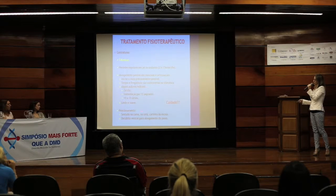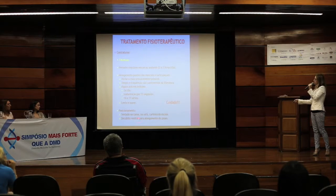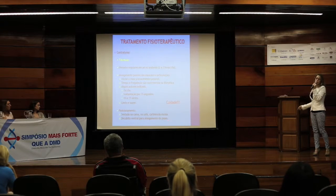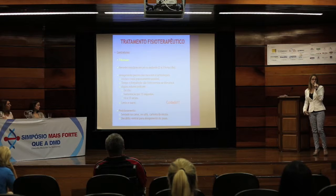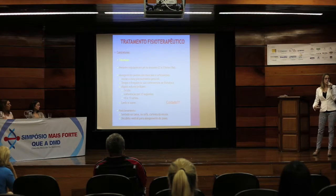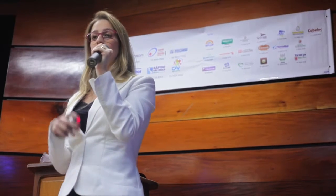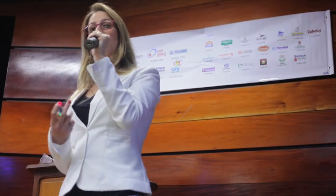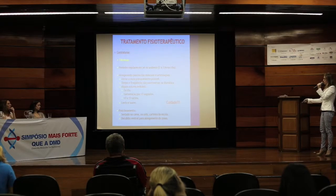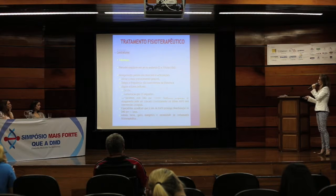O posicionamento às vezes funciona como alongamento, principalmente a criança deitada em decúbito ventral para alongar os flexores de quadril, pois é uma musculatura que a gente sabe que as crianças ficam muito sentadas e não temos uma órtese para alongar o quadril. Então a brincadeira ou atividade de ver TV ou jogar videogame em decúbito ventral é muito útil para ajudar no alongamento.